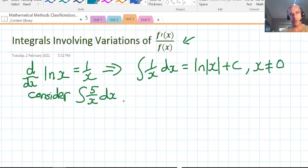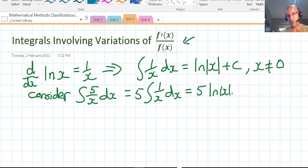So let's try one, let's consider integral of 5 over x dx. We can write it with the constant out the front and then looking at the result above it's simply just 5 log x absolute plus c. x can't be 0.